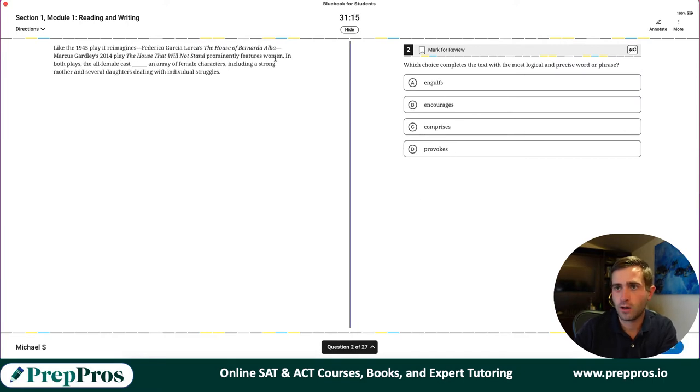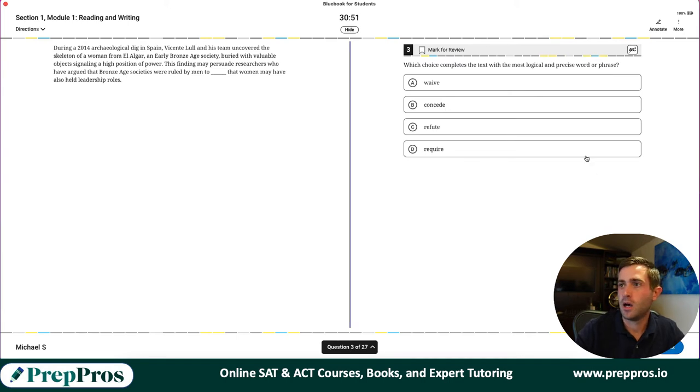So I'm going to jump to the second sentence here and skim through the first one. In both plays the all-female cast blank an array of female characters including strong mother and several daughters dealing with individual struggles. We're saying it's like made up of is the context we're using here. That's really what comprises means. It's made up of those different pieces. We're not engulfing, encouraging, or provoking. These are really just vocab questions, word in context questions.